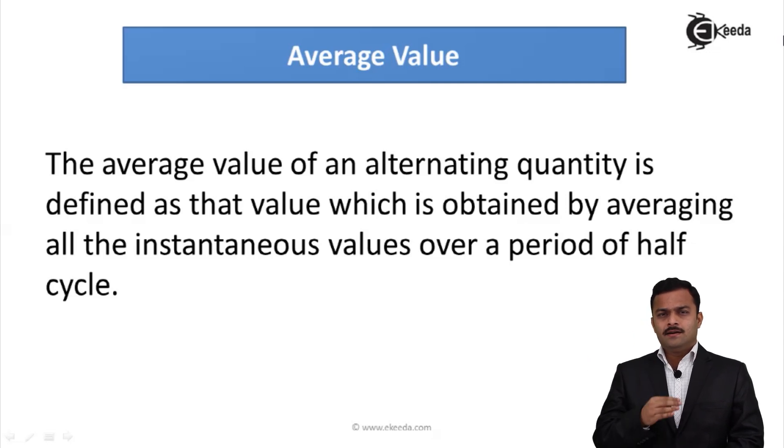The thing is that if I average or if I add all the instantaneous values in positive as well as negative half cycle, ultimately it sums up to zero. So you can say average value zero, but that is not the case.